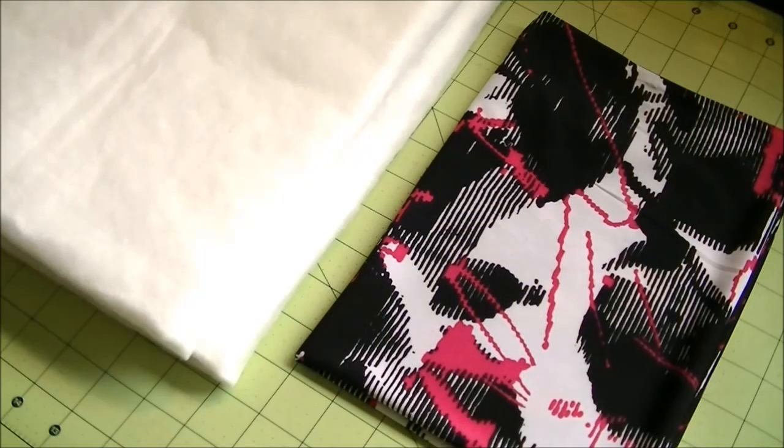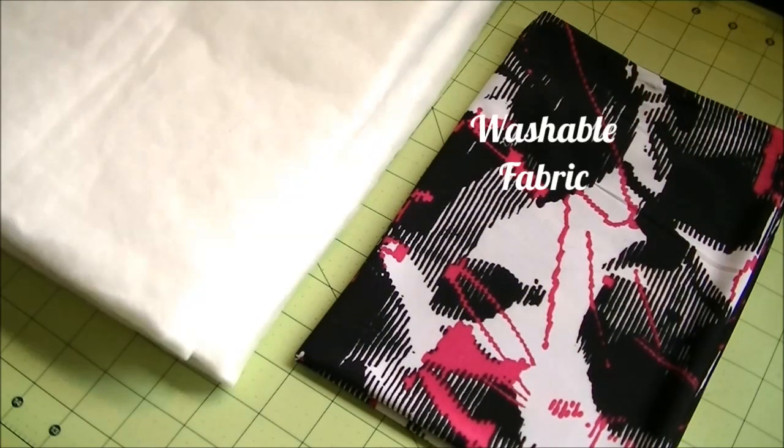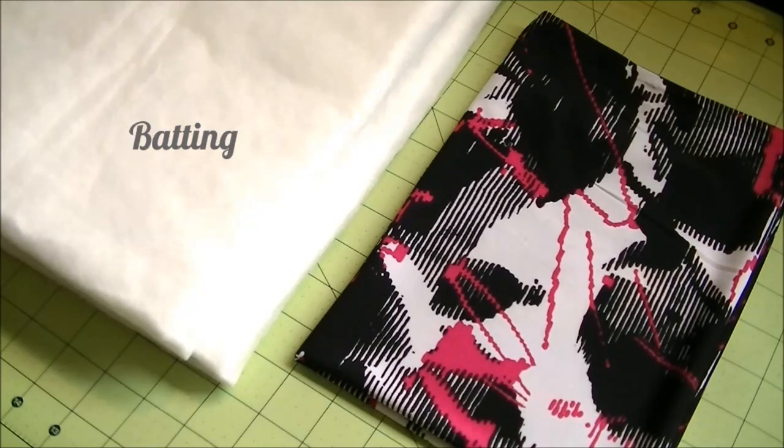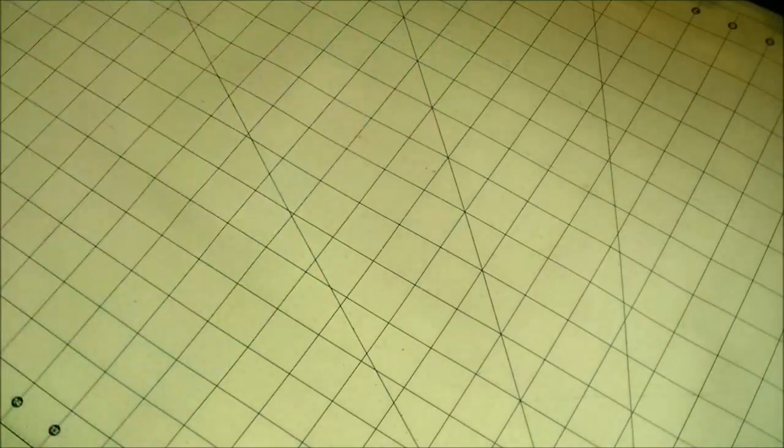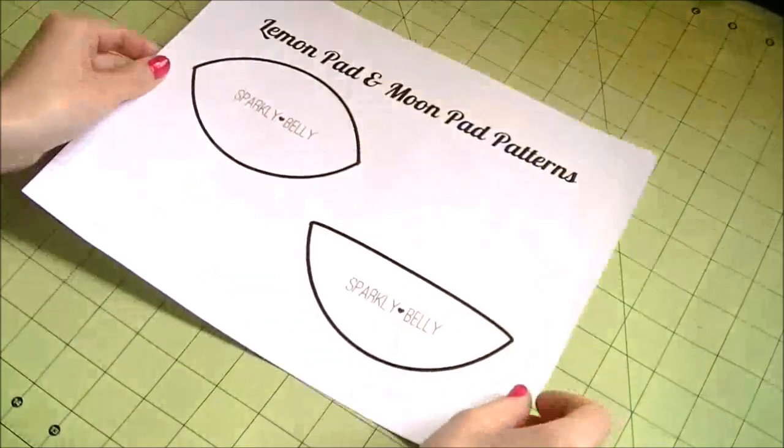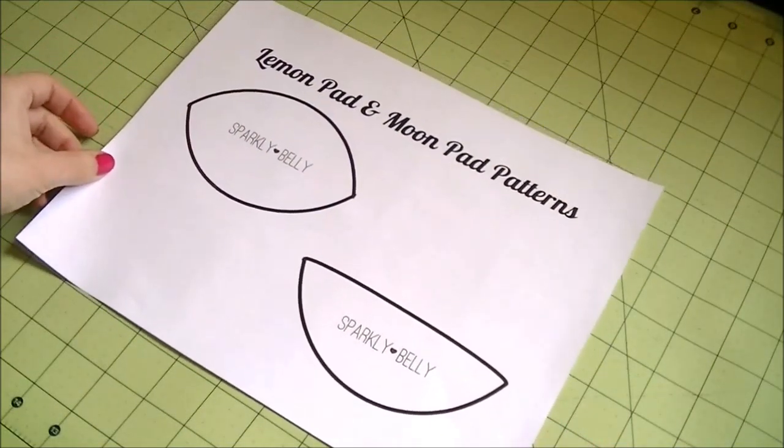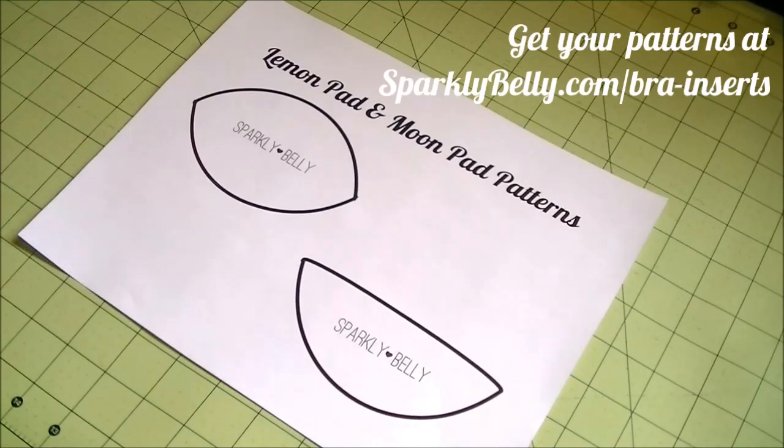To make lemon pads and moon pads, you need washable fabric. I'm using stretch cotton here but old t-shirts would work well too. Batting or filler - pick one that's washable. You can use washable shoulder pads, but shoulder pads I saw at a store were just made out of layers of batting anyway, so I'm using regular batting here. The free pattern from my blog? You can get yours free at sparklybelly.com/bra-inserts.